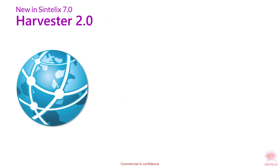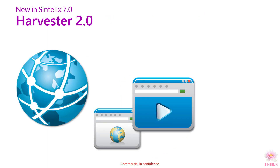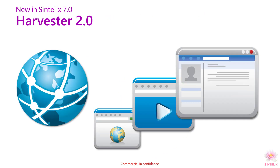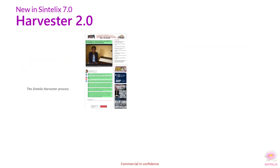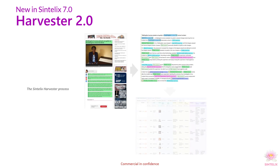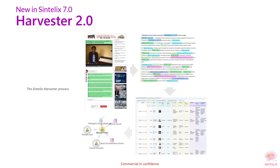The web is a growing sea of data and our customers need to collect open source intelligence. Syntelix 7 brings you Harvester 2.0 for enhanced internet data collection. In the new Harvester, background harvesting keeps you in control of your desktop, while personas and batch scheduling make harvesting easier and more automated.